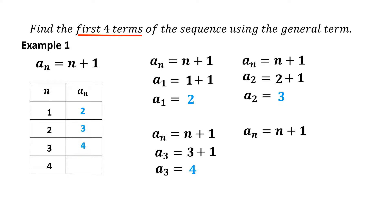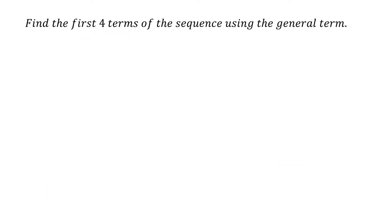Lastly, the fourth term using the general term a sub n equals n plus 1. Substitute n equals 4: a sub 4 equals 4 plus 1, which equals 5. Therefore, the fourth term of the sequence is 5. The first four terms are 2, 3, 4, and 5.